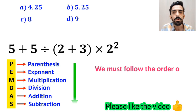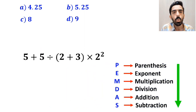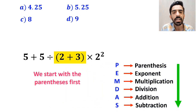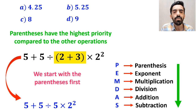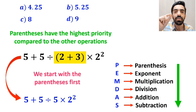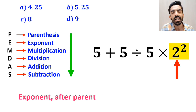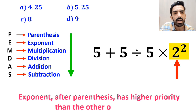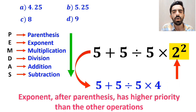We must follow the order of operations step by step from top to bottom. So we start with the parentheses first, because parentheses have the highest priority compared to the other operations. Instead of this expression, we can write 5 plus 5 divided by 5 times 2 to the power of 2. In the next step, we go to the exponent, because exponent after parentheses has higher priority than the other operations. So this expression simplifies to 5 plus 5 divided by 5 times 4.